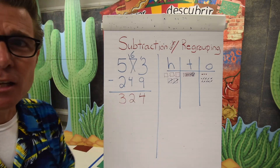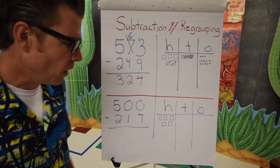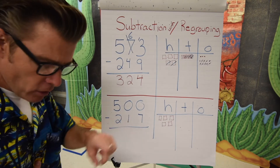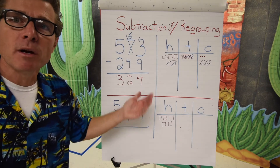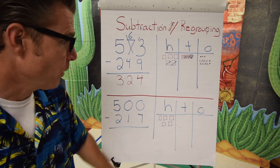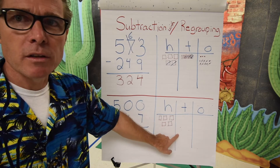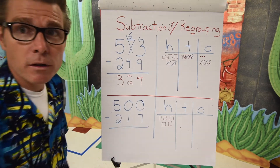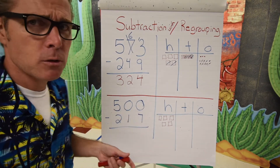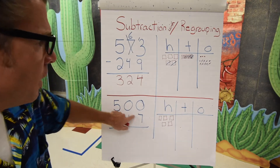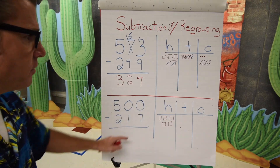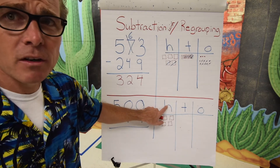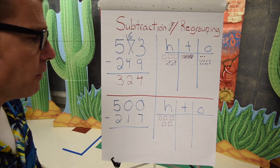That's really what's going on with regrouping. Let's take a look at one more problem. This time we're going to take five hundred and subtract two hundred and seventeen. Just like the first problem, I've broken this out: we have five hundred in the hundreds place, zero in the tens place, and zero in the ones place. We start in the ones place with zero and we're trying to take seven away from zero, which you can't do. Going to the tens spot — well, there's nothing to borrow there either; it's just as empty as the ones spot.